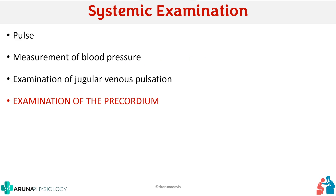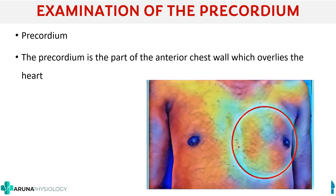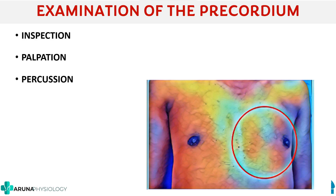In this video we will basically be talking about the examination of the precordium, which is the main part of cardiovascular system examination. Precordium is the anterior part of the chest wall which overlies the heart. We have four steps to examine the precordium: inspection, palpation, percussion, and auscultation. This is the systematic way of examining whatever system it is — even in the respiratory system or GIT, we have these four steps.